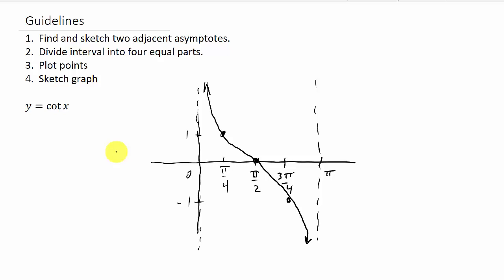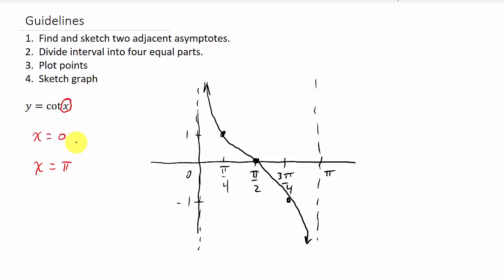The first thing we need to do is look at some guidelines. The first thing we do is find and sketch two adjacent asymptotes. For cotangent, regular cotangent x is undefined at 0 and pi — those are the two vertical asymptotes. To find the asymptotes, you take whatever you're taking the cotangent of, set that equal to 0, and set that equal to pi, then solve for x. You'll see that better in the examples.